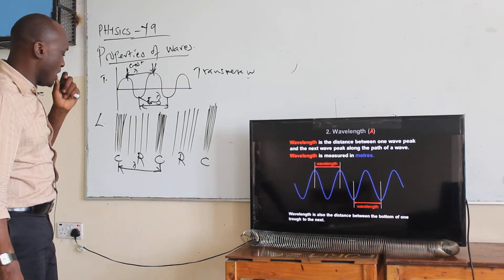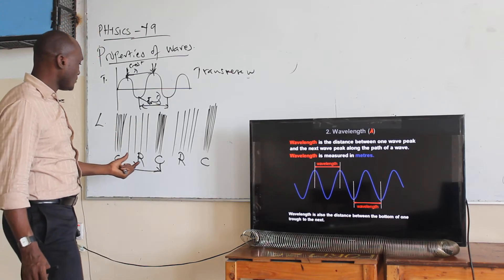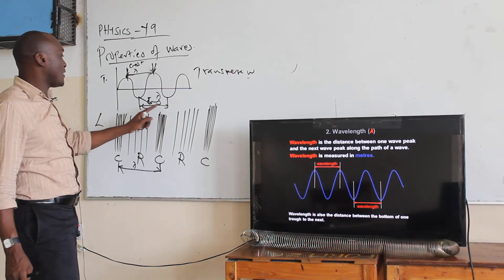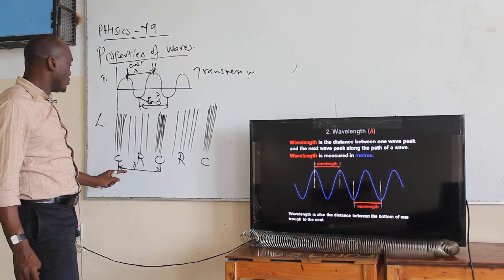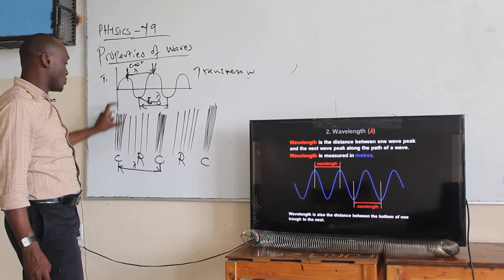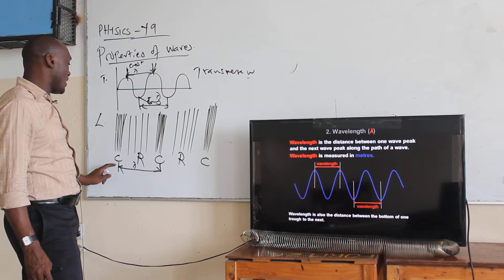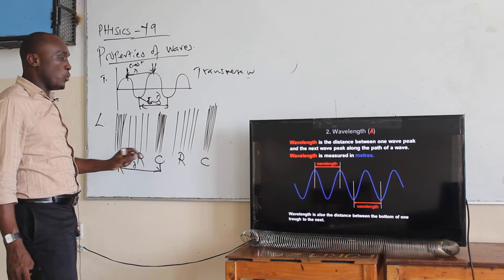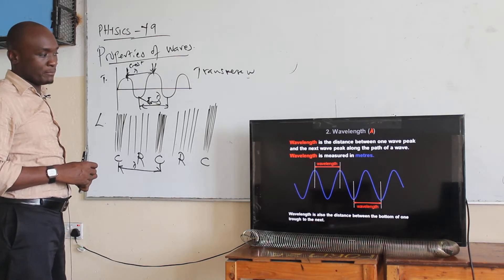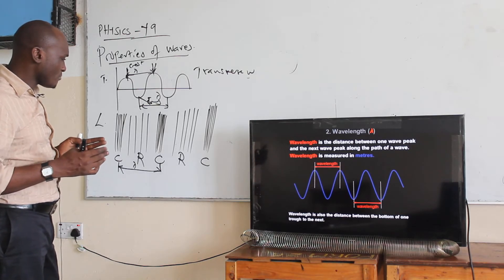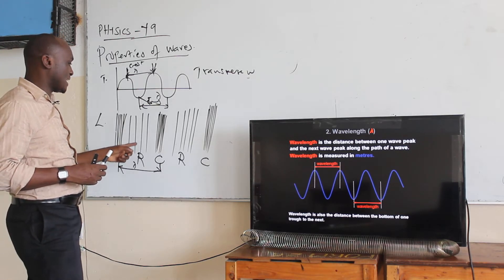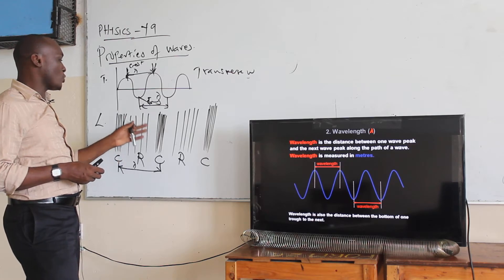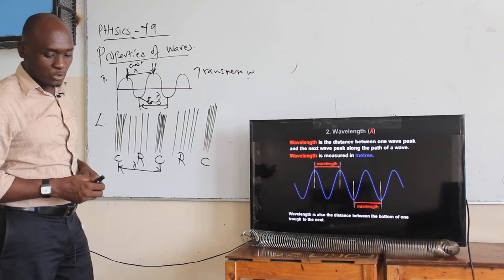For a transverse wave, it could be crest to crest or trough to trough. For a longitudinal wave, it is compression to compression. We don't use rarefaction because it is difficult to determine the center of a rarefaction, but with a compression it is very easy.